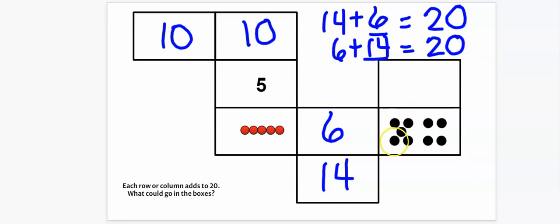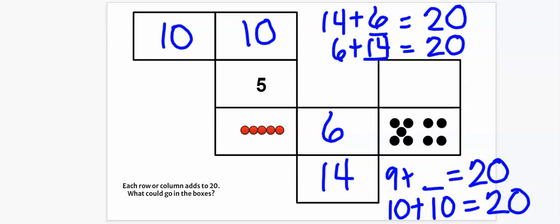So now we have one more. We know this is 9. 9 plus something equals 20. Well, I know 10 plus 10 equals 20. But I know if I had 10 here in this empty box and 10 here, but I don't. I would need 11. So 11 and 9 equals 20.